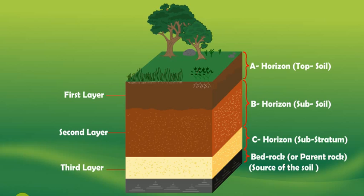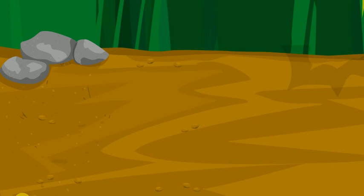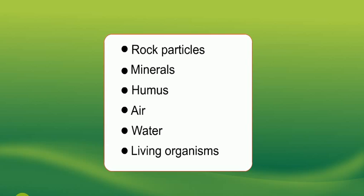In the substratum, the rock pieces are still breaking down to form smaller and smaller particles. The most important part of soil for us is the topsoil. The soil is mainly made up of different sized rock particles and humus. Soil is made up of six components: rock particles of different sizes, minerals, humus, air, water, and living organisms.